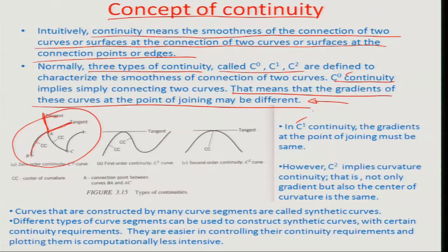The C1 continuity again has the gradients at the point of joining as the same. You can see the tangent at the point of joining of this section of the curve is slope wise similar to the tangent as this section of the curve. That is how C1 continuity is defined.